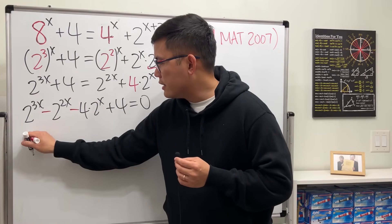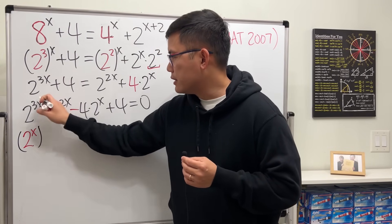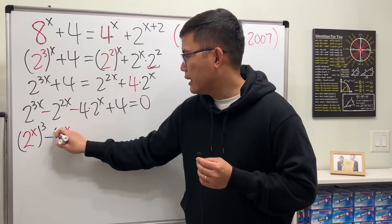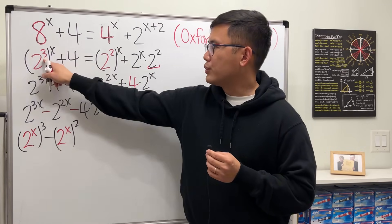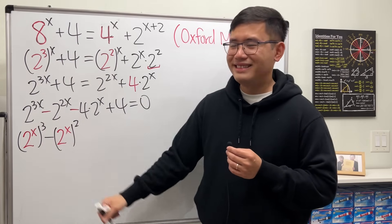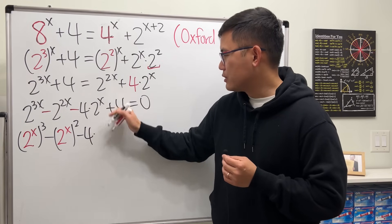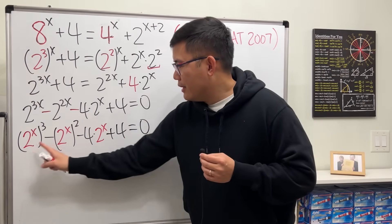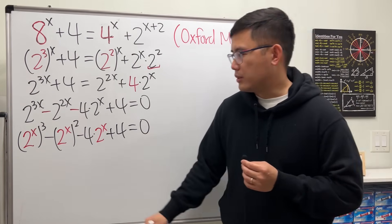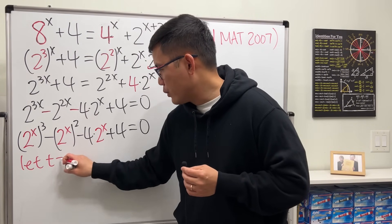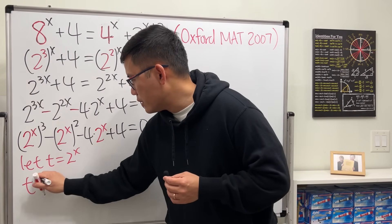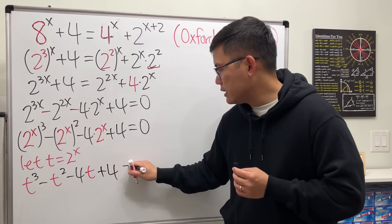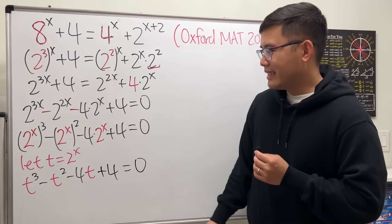Because for the first part, we can write this as 2 to the x first, and then raise that to the 3rd power. Next, we can write this down as minus 2 to the x, and then to the 2nd power. Earlier, we did the 2 to the 3rd and the x. Right now, we have 2 to the x and the 3rd. And the same thing here, just minus 4 times 2 to the x, and then plus 4 equal to 0. Now, all these right here are 2 to the x. We can do a quick substitution. I will say let t equal to 2 to the x. So we get t^3 - t^2 - 4t + 4 = 0.